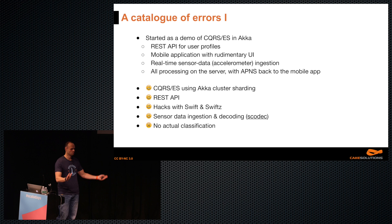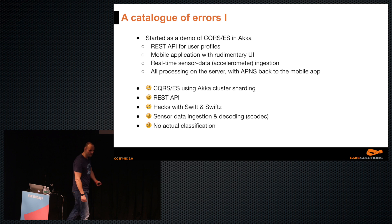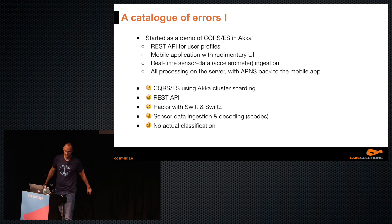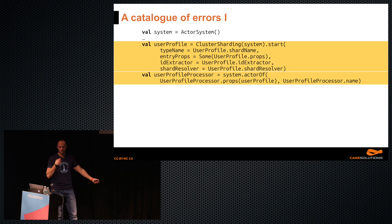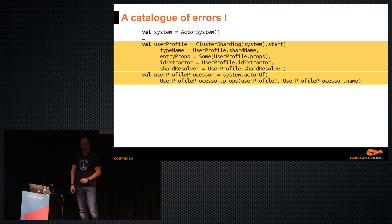What worked well: CQRS/ES in Akka — perfect. REST API — not a problem. We had Swift — which is Scala.js but in Swift — for sensor data ingestion and decoding with scodec, which was really quite cool. The Pebble sent big-endian 13-bit signed integers and scodec was fantastic for decoding them. There was no actual classification, but everything else was good.